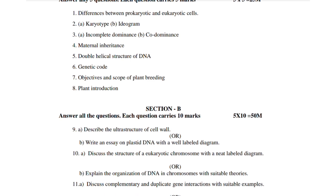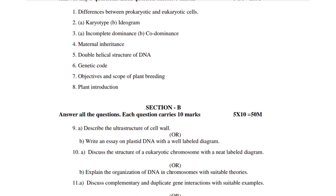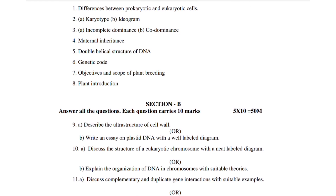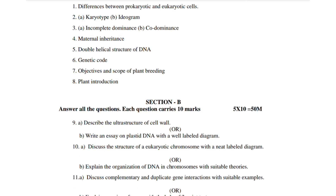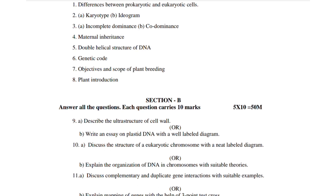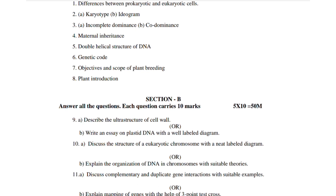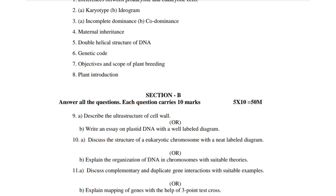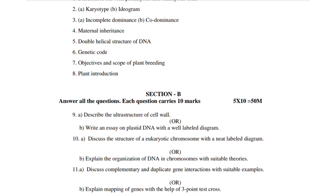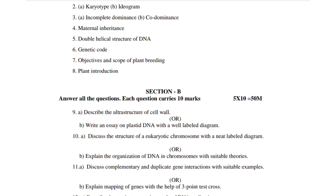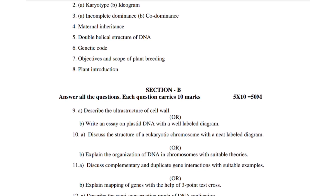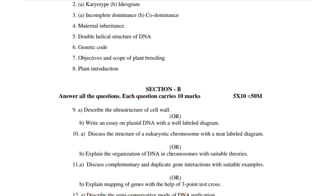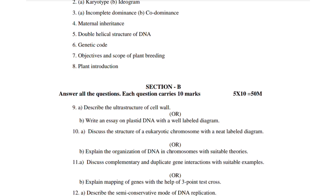11th (a) discuss complementary and duplicate gene interaction with suitable examples. For 10th (b), include two or three suitable theories on DNA organization. 11th (b) explain mapping of genes with the help of three-point test cross.